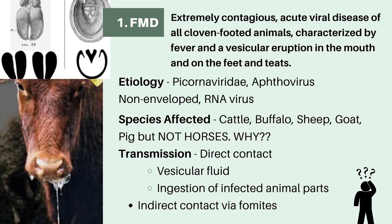Beginning with FMD, that is foot and mouth disease, it is an extremely contagious acute viral disease of all cloven-footed animals. Cloven-footed animals are those that have a divided hoof. As you can see in the diagrammatic representation on the top left corner, picture 1 shows a hoof clearly divided into two parts, whereas picture 2 shows an undivided hoof. So picture 1 is a cloven-footed animal and picture 2 is a non-cloven-footed animal.